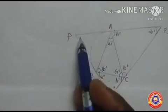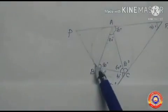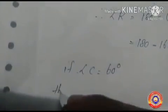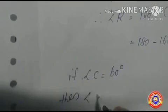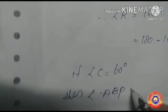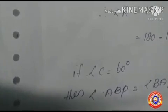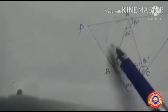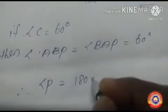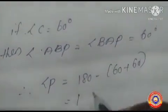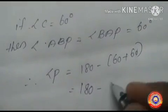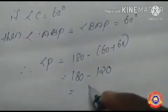Next we have to find angle P. Here angle C equal to 60 degrees is the angle formed from chord AB. So angle ABP equals angle BAP equal to 60 degrees in triangle ABP. Therefore angle P equals 180 minus (60 plus 60), which equals 180 minus 120, giving angle P equal to 60 degrees.